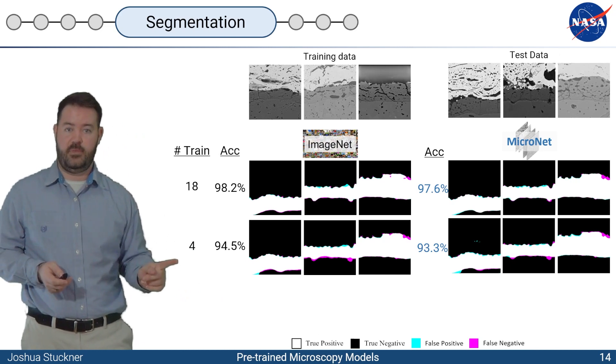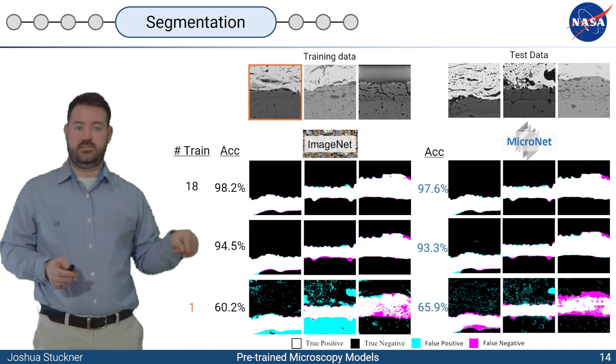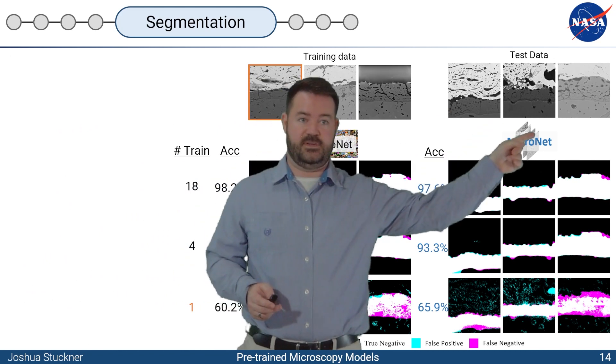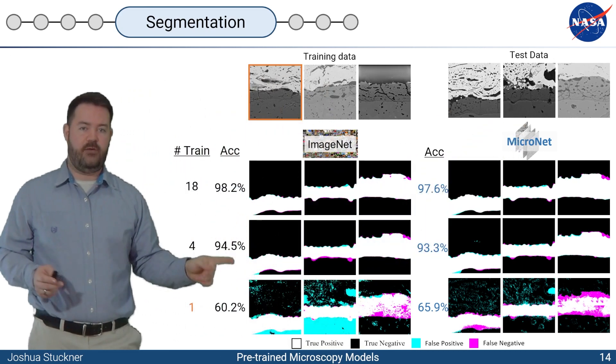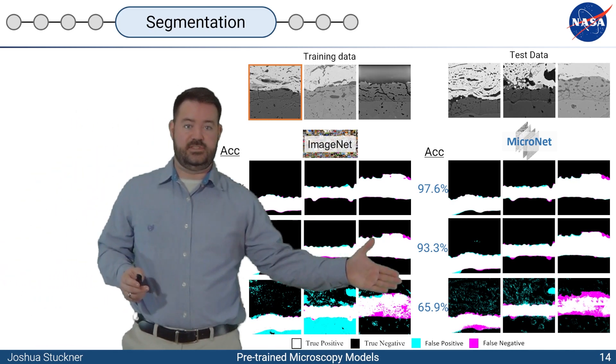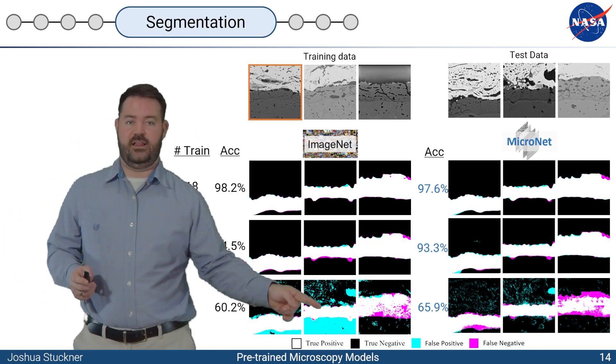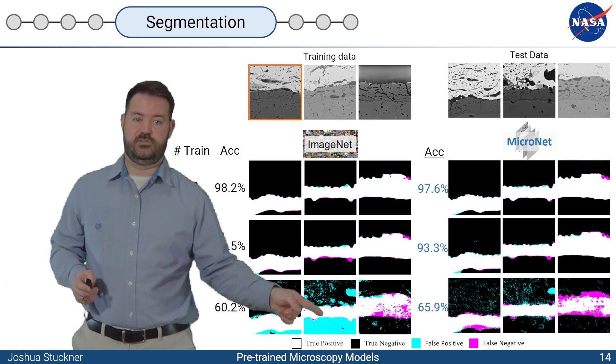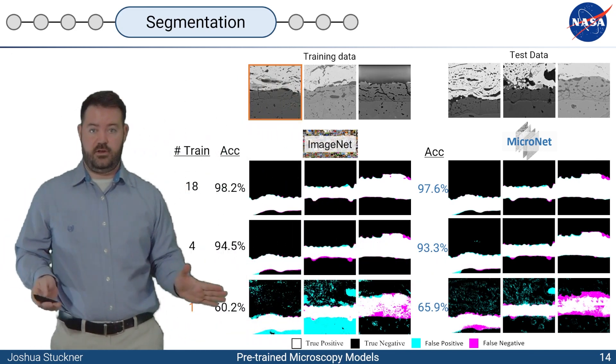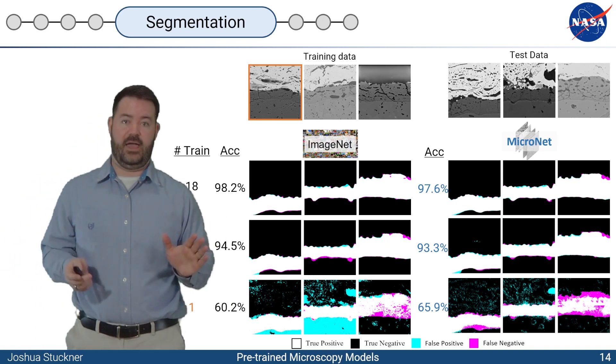Even pre-training on ImageNet has pretty good microscopy segmentation results. If you're not doing any pre-training, you should at least be doing ImageNet pre-training. Now, when we go down to just one image in the training set, which was this image outlined here in orange, and notice that this image is quite different from some of these other ones, especially the far one, we do have a large reduction of accuracy, and that's to be expected. But Micronet does a lot better, a 6% increase in accuracy. Yeah, it's down to 66%, but that difference between 60 and 66 in this case is the difference between being able to do analysis on it. With the Micronet pre-training, we would have been able to do microscopy analysis with it.